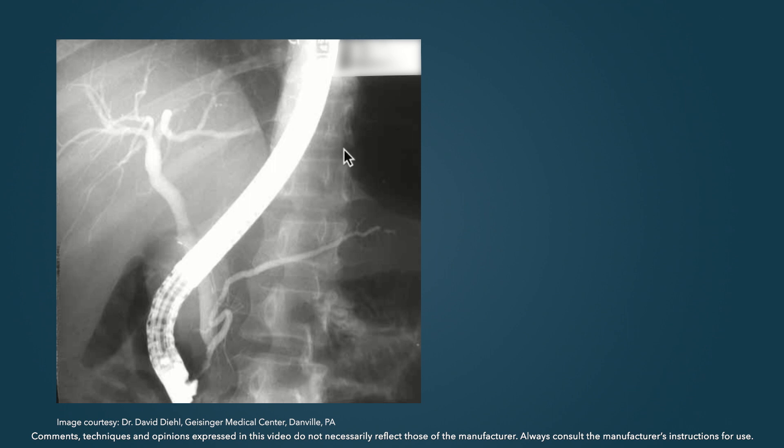This is a nice example of representative pancreatic biliary anatomy. In this case, you can see the duodenoscope, and as a frame of reference, you should know that the duodenoscope diameter is about 12 millimeters. This serves as an internal ruler by which you can measure the diameter of the other ducts.